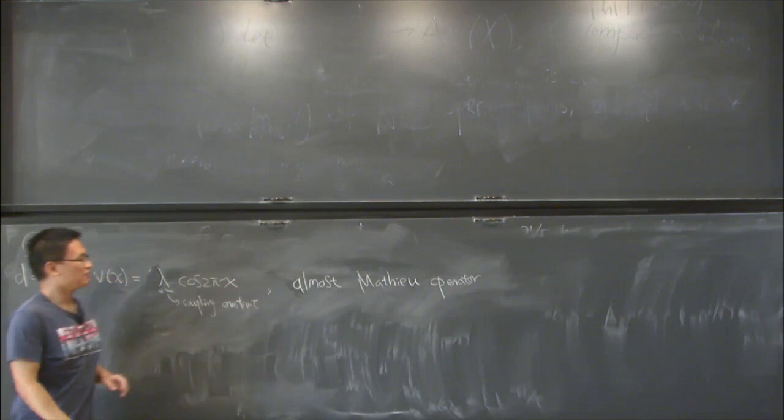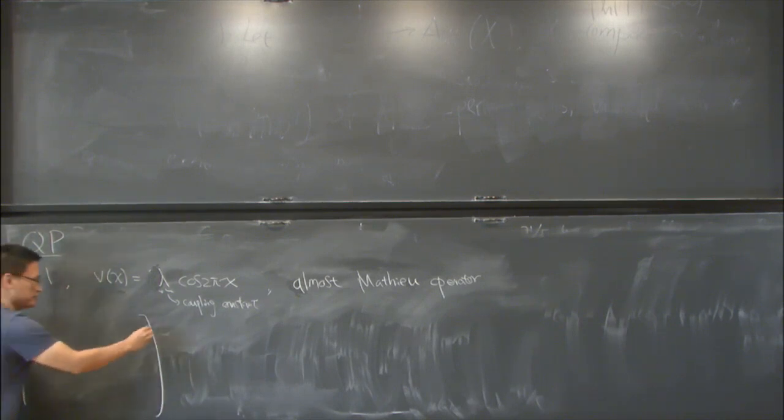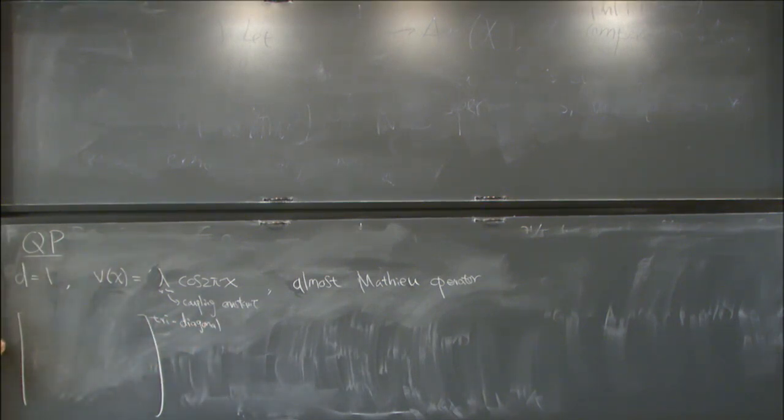In physics is known as the Harper's model. So one can view this operator as an infinite dimensional tri-diagonal matrix. So this H is infinite dimensional matrix. On the diagonal, we have λ cos(2πx), λ cos(2π(x+α)), and so on. On the off-diagonal, we have some ones on the off-diagonal. But in the other places, we have zeros. So this is a tri-diagonal matrix.